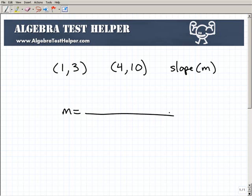So m is going to equal, we're going to subtract the y's here. So this is a y and this is a y. To be clear, these are ordered pairs, these are coordinates. This is our x part, this is our y part, this is our x part, and this is our y part. So you can see here that 3 and 10 are our y parts. So it's going to be 3 minus 10 here.